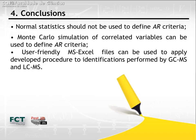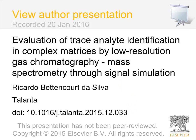The most relevant conclusions from this work are that normal statistics should not be used to define abundance ratio criteria. Monte Carlo simulations of correlated variables can be used to set criteria for abundance ratios observed in sample peaks. User-friendly Excel files can be used to apply the developed examination strategy to identifications performed by GCMS and LCMS.